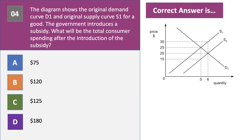Question four: the diagram shows the original demand curve D1 and original supply curve S1 for a product. The government introduces a subsidy. What will be the total consumer spending after the introduction of the subsidy? Please have a go at question four. A subsidy shifts the supply curve out from S1 to S2.